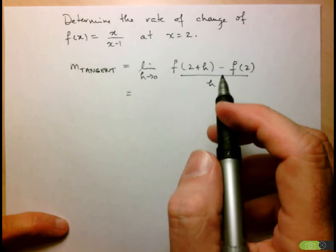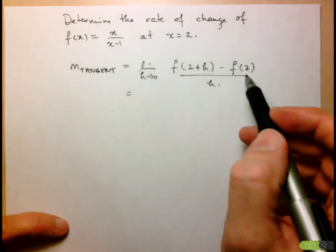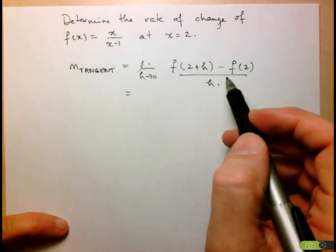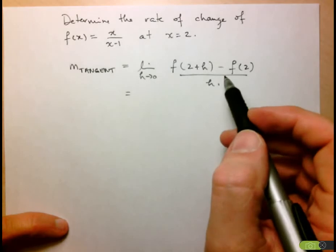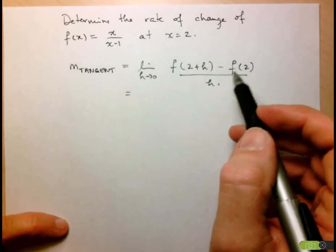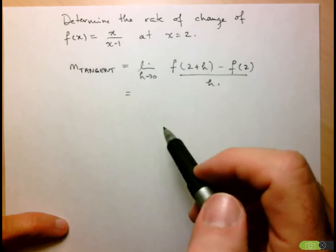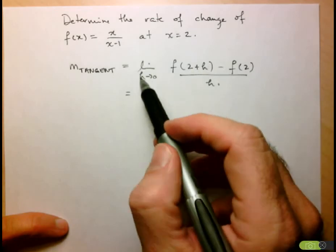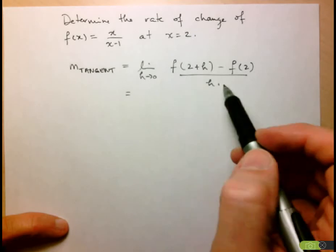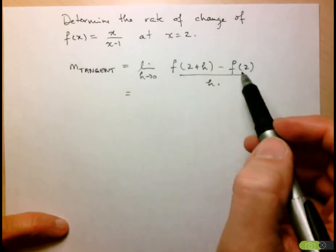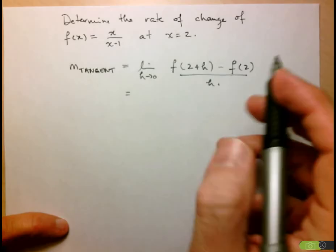Just a reminder of what this represents: this expression represents the slope of the secant joining the points on the function at x equals 2 and a nearby point at x equals 2 plus h. This means we're looking for the number that these slopes approach as h gets closer and closer to 0.